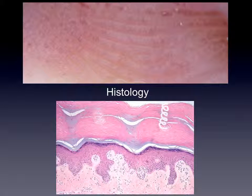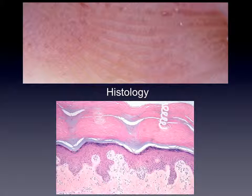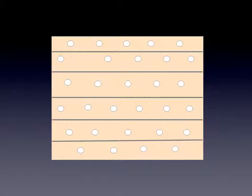So now we know the most important structures of the glabrous skin. Here we see a scheme with the furrows and, as white structures, the openings of the sweat glands.